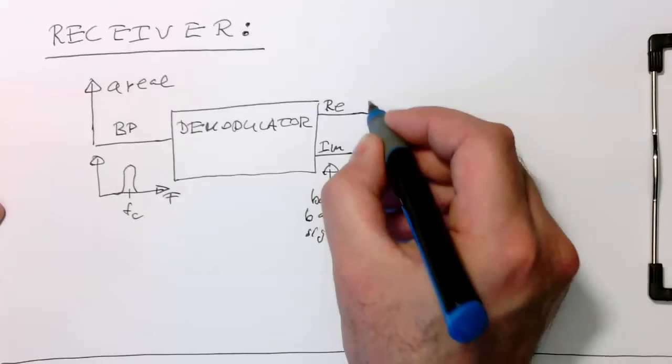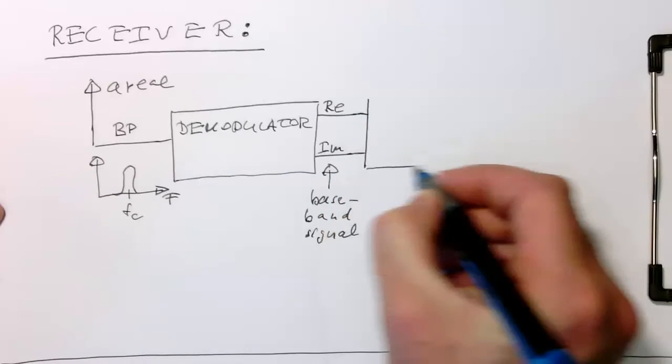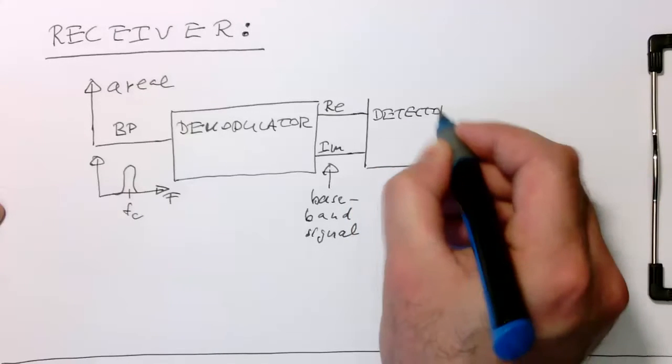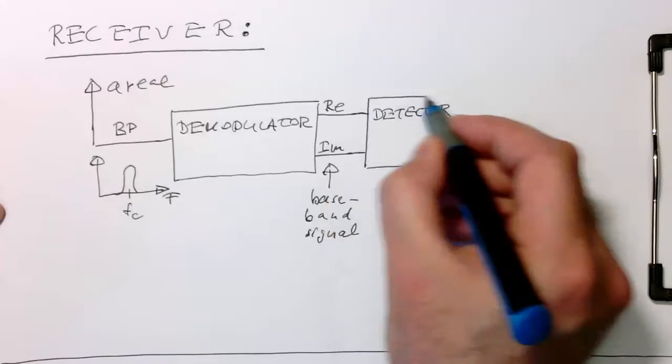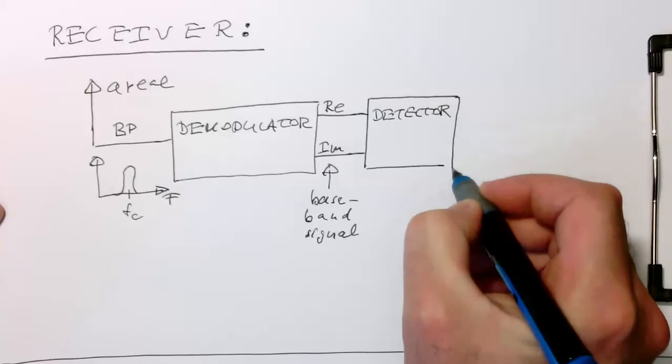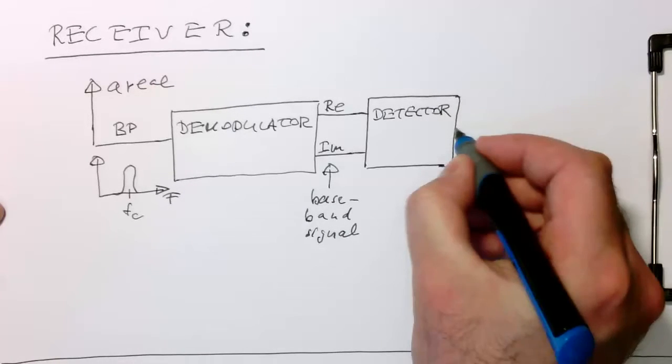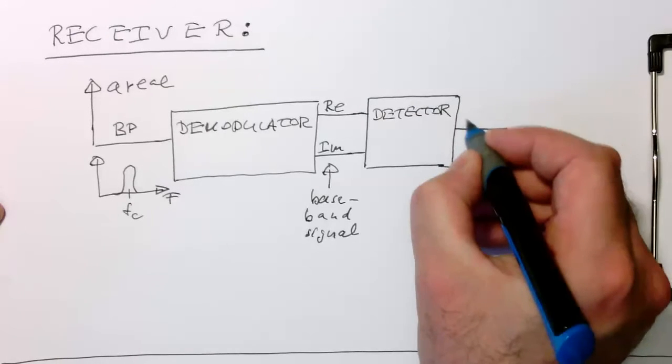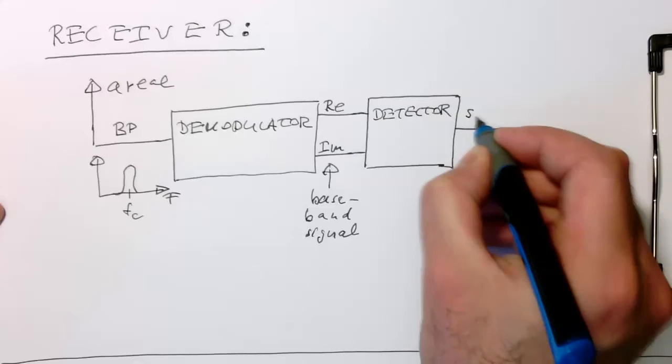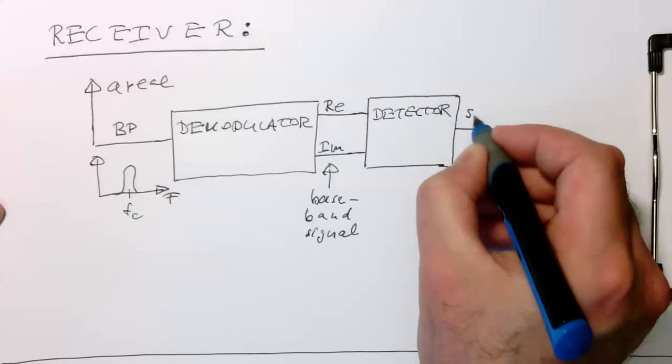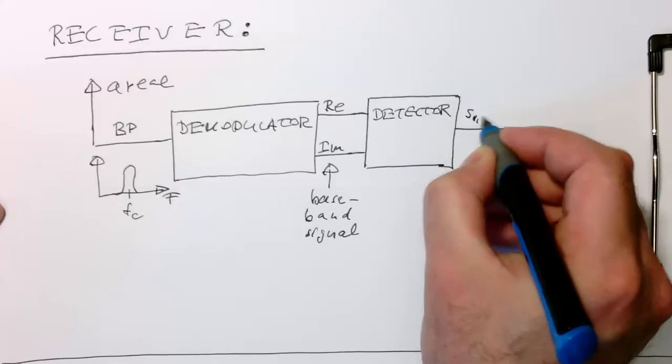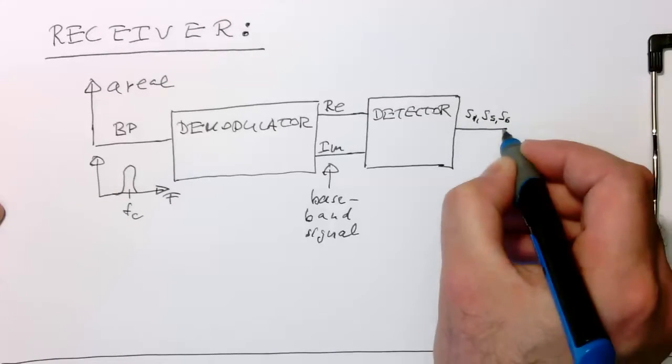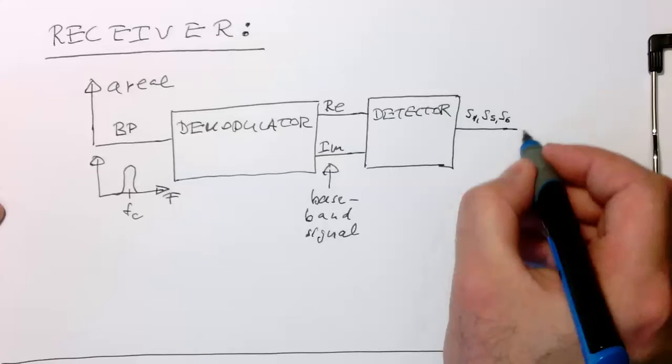And so now we have here a detector. And the output from the detector gives us the symbols. So here, at this point, then we have a stream of symbols saying, this is here to detect the symbol, the symbol, some symbol s1. And then the next one is s5 and s6. So here, there are the proper symbol names coming out.